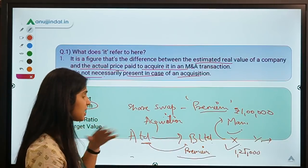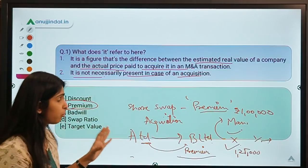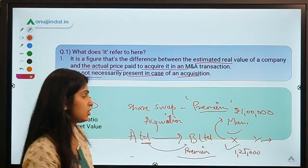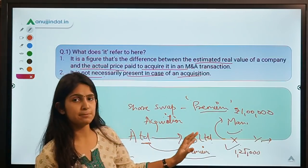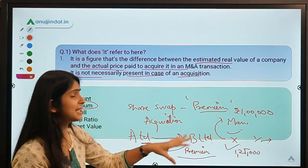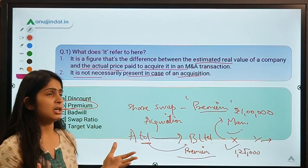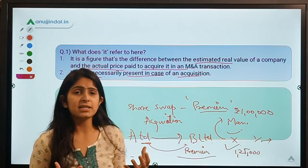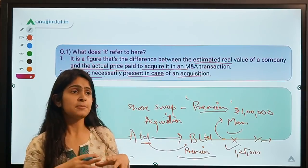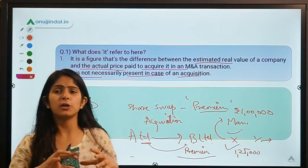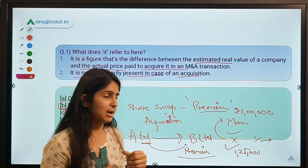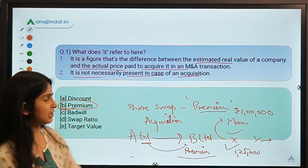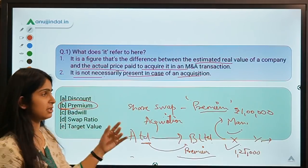We discussed one case where the acquisition is beneficial, but what if B Limited is in controversy for corporate governance issues? Then it is risky for A Limited to buy B Limited and it may not pay a premium — it might even get a discount. When regulators sell stressed assets or debt-ridden companies, they provide extra benefits to the buyer to attract them or sweeten the deal. So an acquisition can take place at a premium, at a discount, or at the real value of the company.